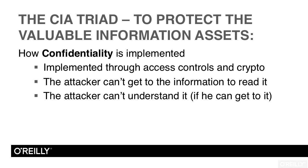Typically, we use access controls and cryptography to protect our valuable information assets. Access controls include things like locked doors. If the bad guy can't get through the locked door to access your information assets, he can't read them and violate their confidentiality. A security guard that keeps unauthorized people away from the information assets is also a type of access control.